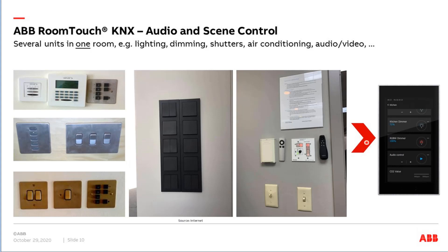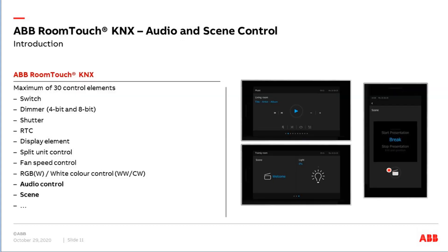We can do it easier by using our KNX ABB RoomTouch — one element, one touch display for all functions: switching, dimming, audio control, scenes, and more. The ABB RoomTouch offers a maximum of 30 control elements. With these we can switch, dim, control shutters, manage room temperature, display values like CO2 concentration, control split units, fans, and DALI gateways. Today we focus on the audio control and the scene function.